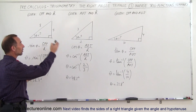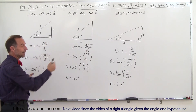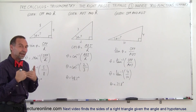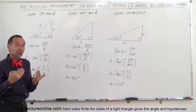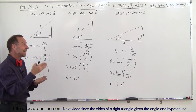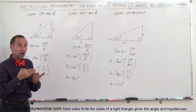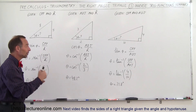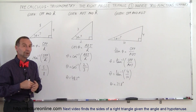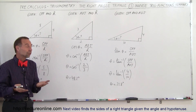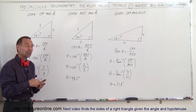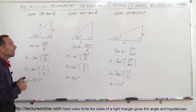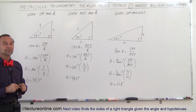So depending on what you're given, you pick either the arc sine, the arc cosine, or the arc tangent. Note that arc sine is another way of saying inverse sine — arc sine and inverse sine are the same thing, as are arc cosine and inverse cosine, and arc tangent and inverse tangent. That's how you find the unknown angle.